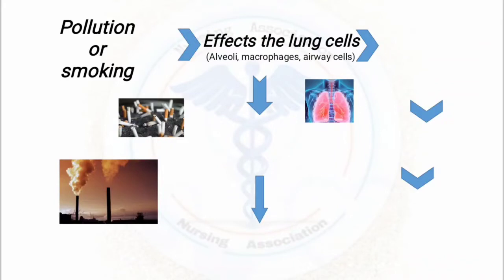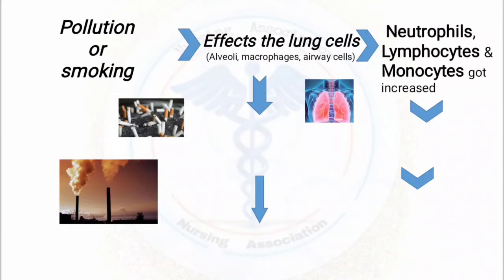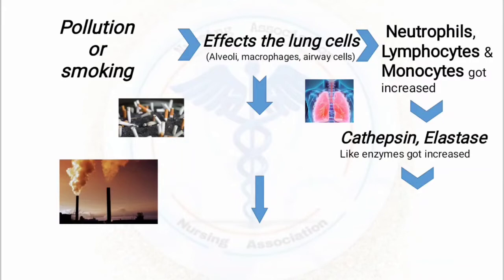After affecting these cells, the body's immune system will start to respond and become active. Neutrophils, lymphocytes, and monocytes will get activated. If they are not capable of killing or reducing the effect of the harmful particles in the lungs, then enzymes like cathepsin and elastase will get increased to destroy the foreign particles and toxic agents.